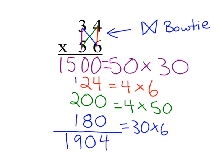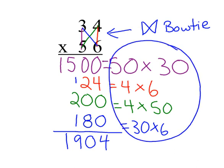As children get better, they can leave out this part and just follow the steps and then add their numbers. And this helps them understand the concept that it's not really 3 times 5, it's 30 times 50. It's not 4 times 5, it's 4 times 50, and so on. The bowtie method.